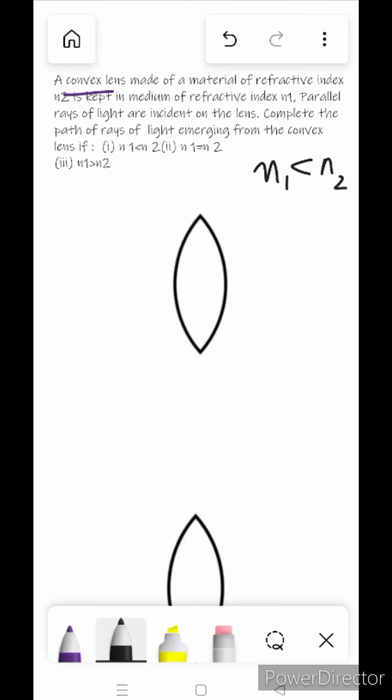Since we have understood the base, the first case is that n2 is greater than n1. n2 is inside the lens and n1 is outside the lens. n2 is greater than n1 means that n2 is the denser medium and n1 is the rarer medium.